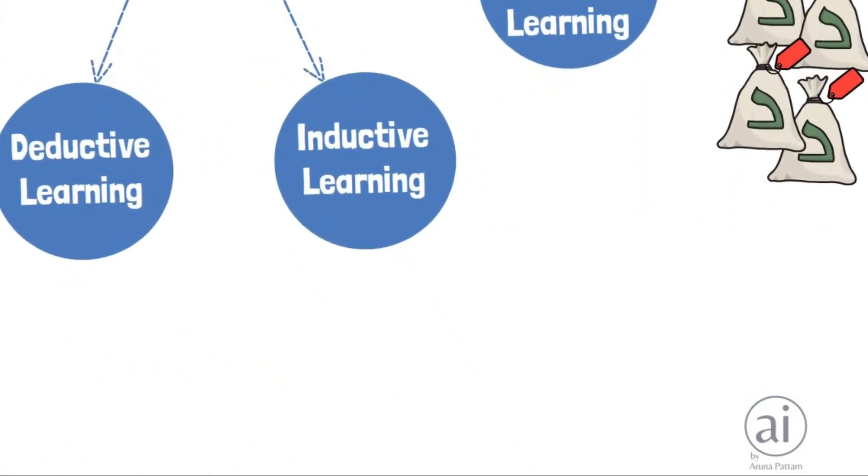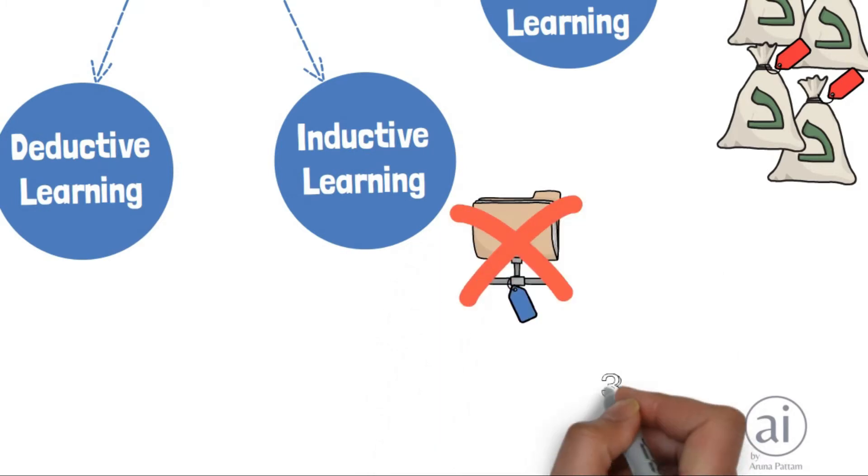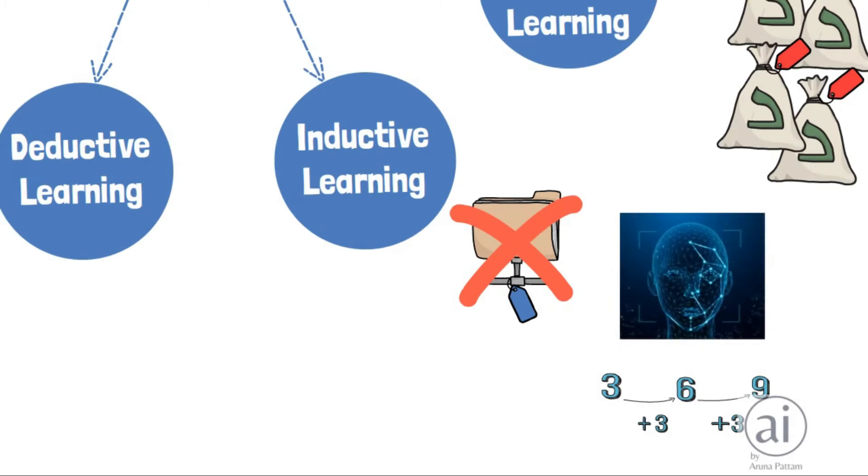Inductive learning: in this method, the machine does not learn from labeled data. It uses data as input, results as output, and learns from the rules and relations between the inputs and the outputs. Used for facial recognition.